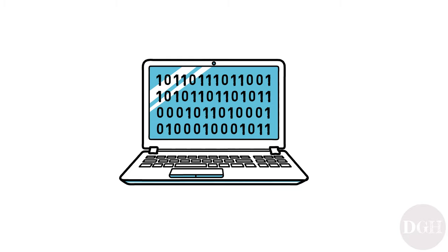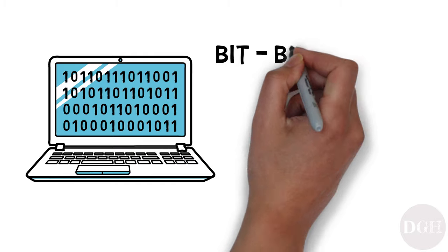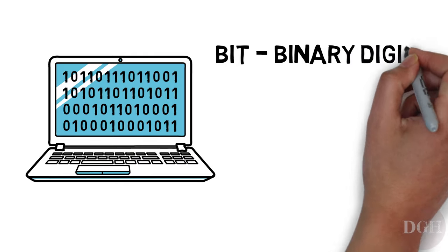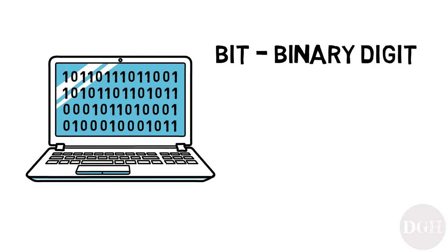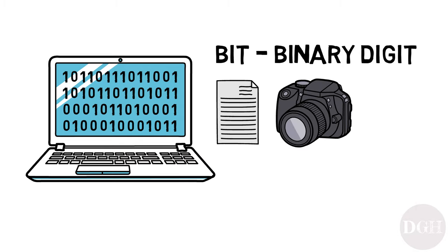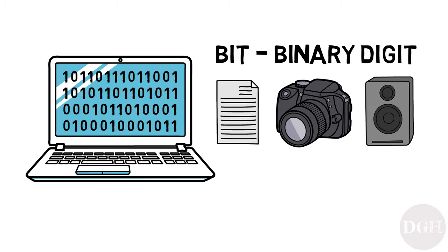The word used to describe these ones and zeros is a bit. It's short for binary digit and it's the smallest unit of data in a computer. These bits — these ones and zeros — are used to store all kinds of information, from text documents to the digital photos that you take to the sounds that come out of your speakers.